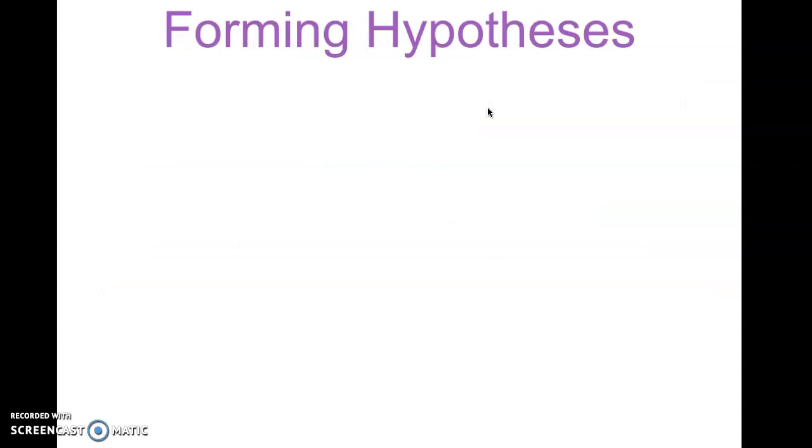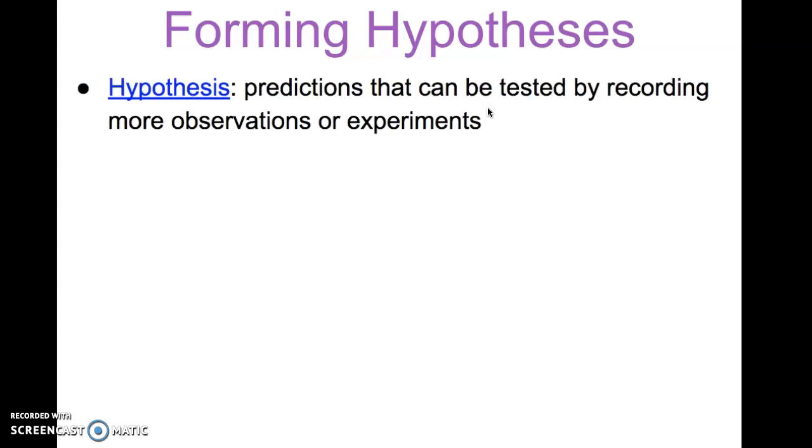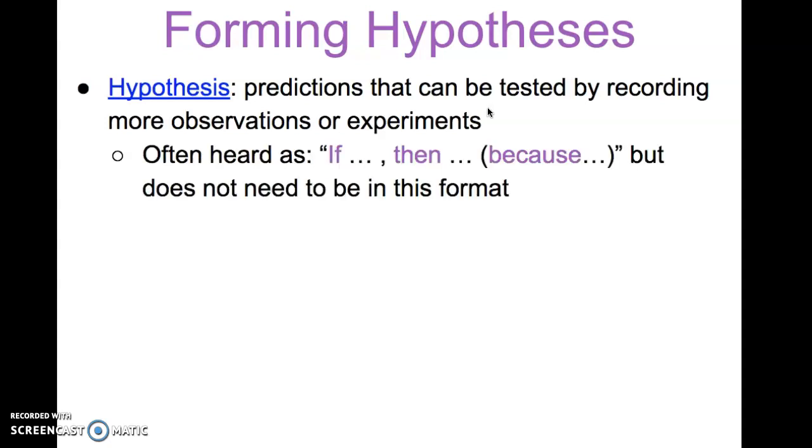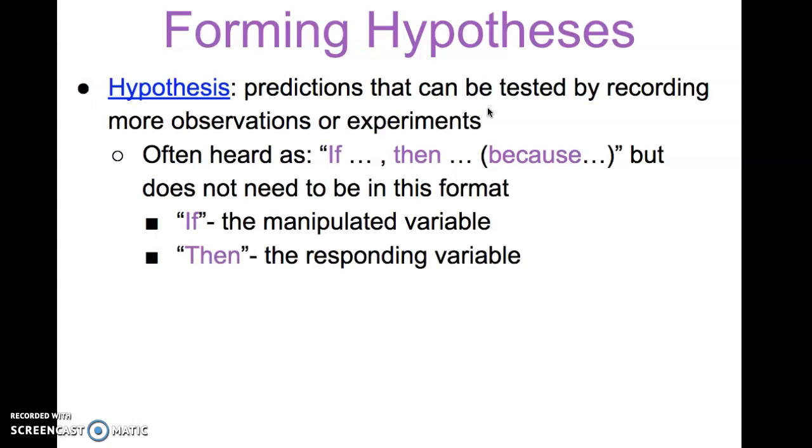Let's take a look at forming hypotheses and we'll see how inductive reasoning and deductive reasoning play a role here. A hypothesis is a prediction that can be tested by recording more observations or experiments. It's often heard as an if-then-because format, but does not need to be in this format. The key thing about a hypothesis is that it must be testable. If you do write it as an if-then statement, the 'if' would be the manipulated variable—the independent variable that you are changing—and the 'then' would refer to the responding variable, or what we call the dependent variable in an experiment.